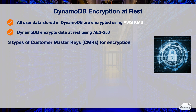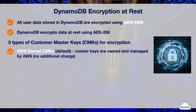There are three types of customer master keys, or CMKs, for encryption. The default DynamoDB encryption option is AWS-owned CMKs. The master keys are owned and managed by AWS, and you cannot access them. With this default option, DynamoDB handles encryption, decryption, and key rotation. There is no additional charge to use AWS-owned CMKs.